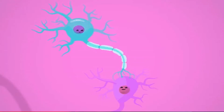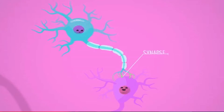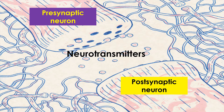Sometimes the word synapse is used to refer to the place where this communication happens, and sometimes it refers to the process. The neuron that sends the signal is called pre-synaptic — 'pre' meaning before — and the neuron that receives the signal is called post-synaptic — 'post' meaning after.